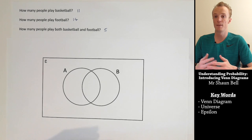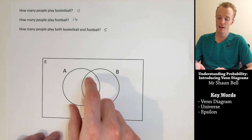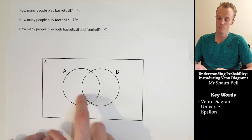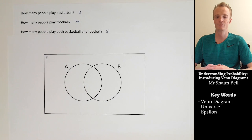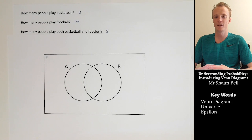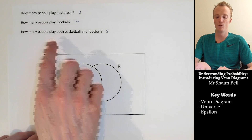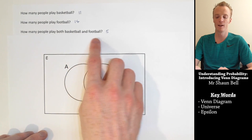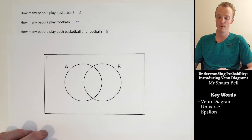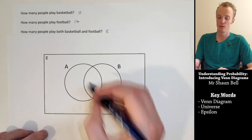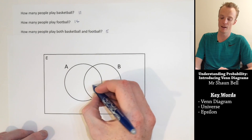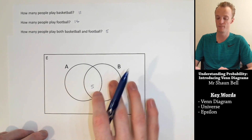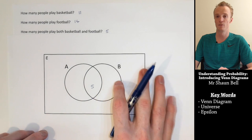But what if someone played both sports? They are represented in the area where the circles overlap. We counted that 5 people played both basketball and football, so we record 5 in the overlapping section.